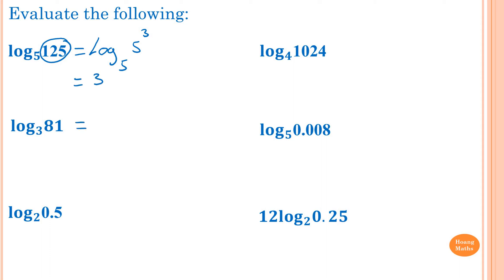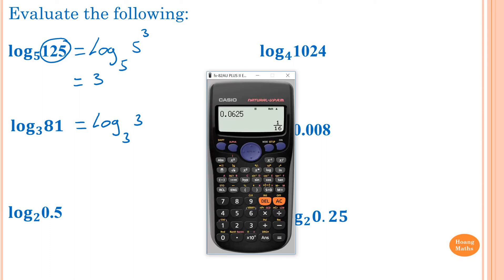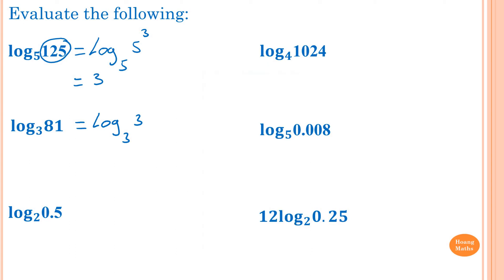Now log base 3 of 81: we need 3 to the power of something to give 81. Using the calculator, 3 to the power 5 is too much, so we try 4 — and 3 to the power 4 is 81. So the answer is 4.